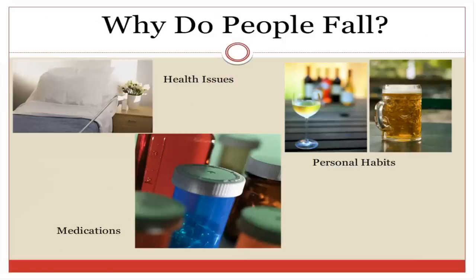Why do people fall? Health issues may include diabetes, Parkinson's, peripheral neuropathy, and other conditions causing difficulty with gait and balance. Medications — the number, type, and combination of prescription, over-the-counter, and herbals — can all cause fall risk. Four or more medications significantly increases your risk for falling. We recommend older adults take all their medications, including over-the-counter and herbal, to a pharmacist or primary care physician on a regular basis.